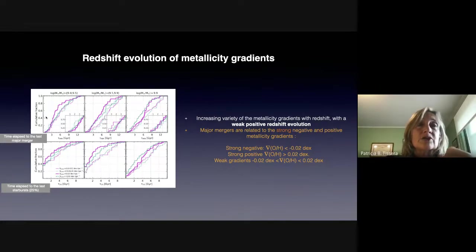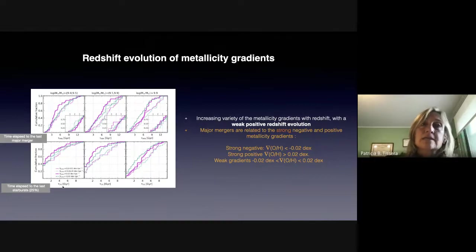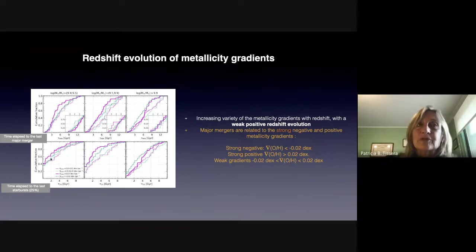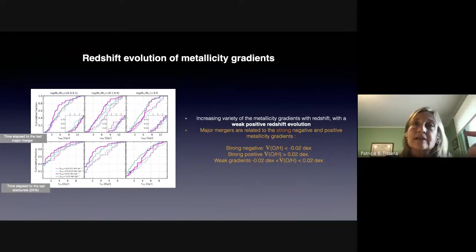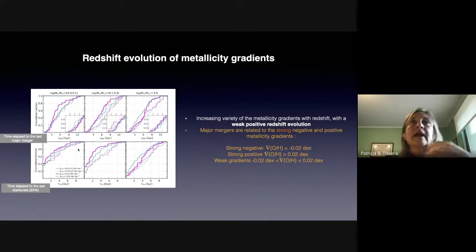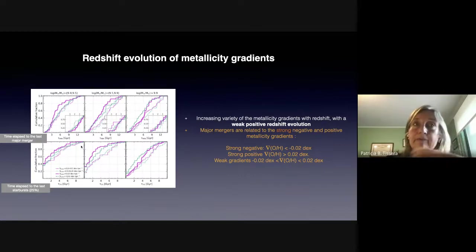Here we have the cumulative fraction of metallicity gradients divided into these categories as a function of the time of the last major merger and the time of the last starburst. For low mass and intermediate mass galaxies, there is a slight trend for galaxies with a recent starburst or recent merger to have strong metallicity gradients — and strong positive metallicity gradients. But for more massive galaxies, we have the inverted relation: they tend to have strong negative metallicity gradients associated to these events. We think this is because these galaxies are in a different stage of evolution, and they have lower potential wells.